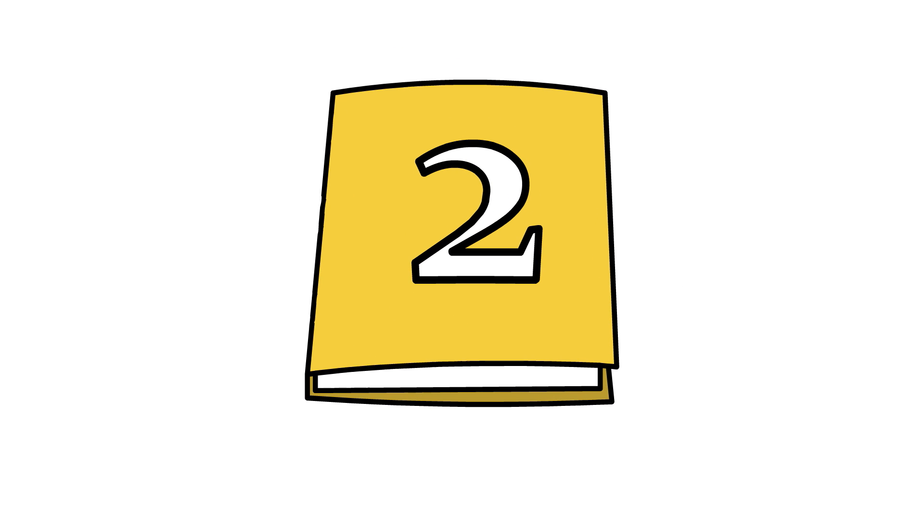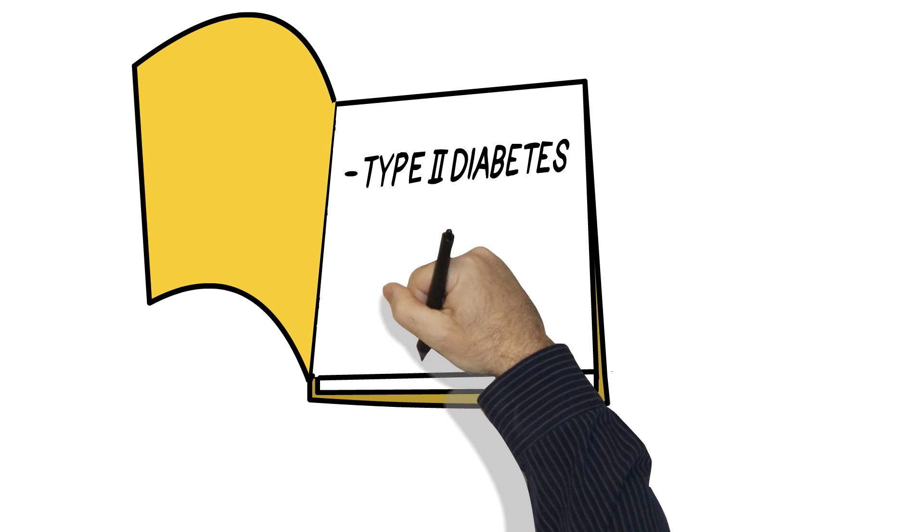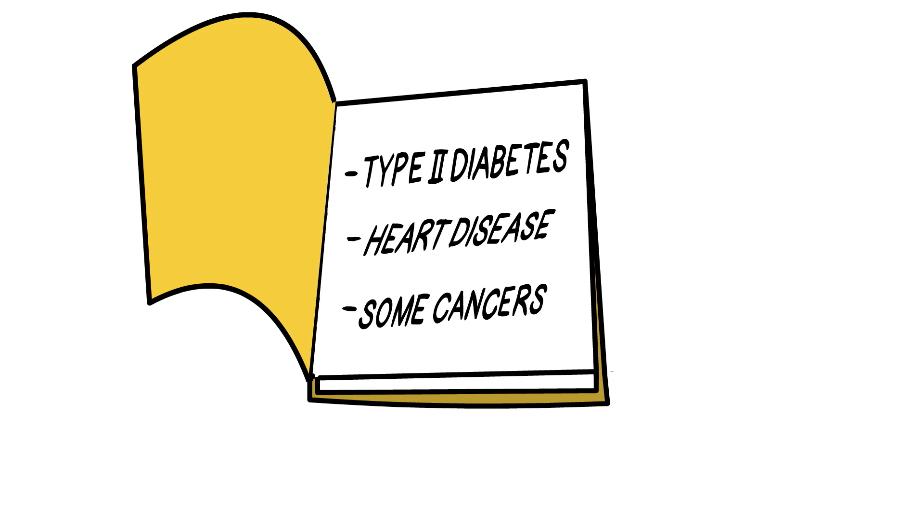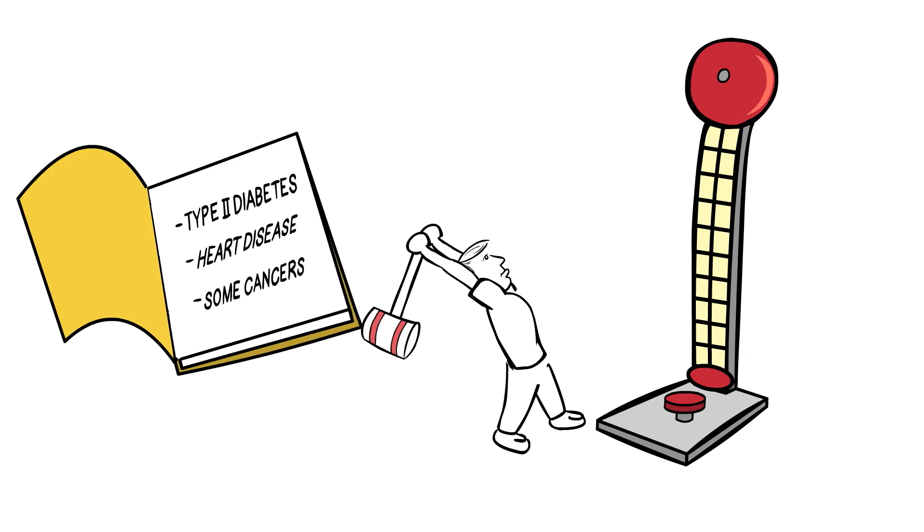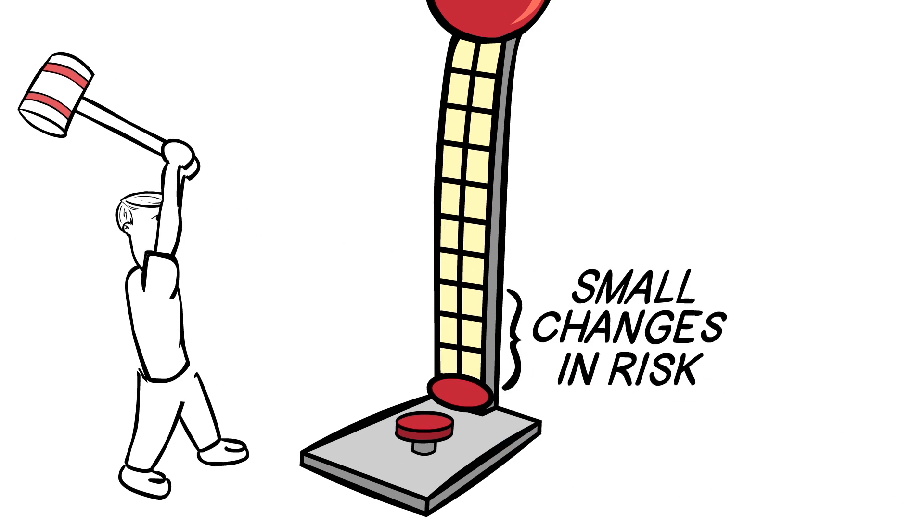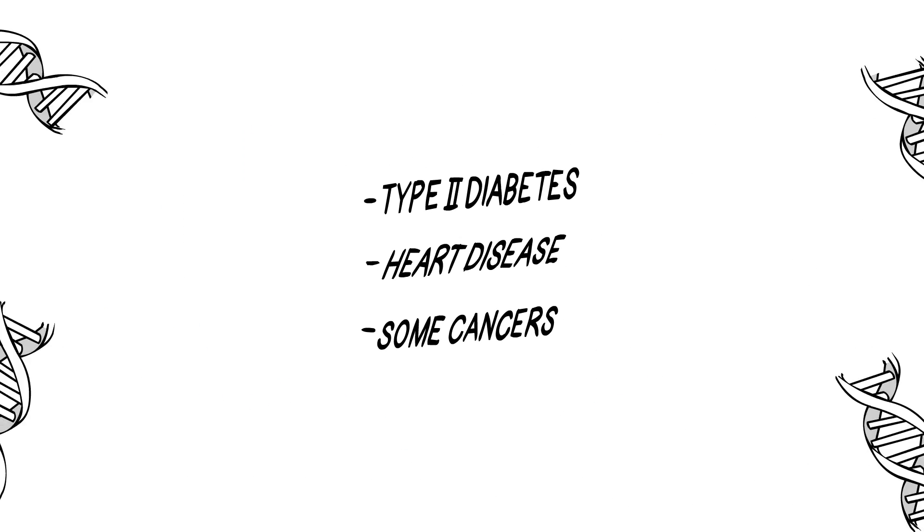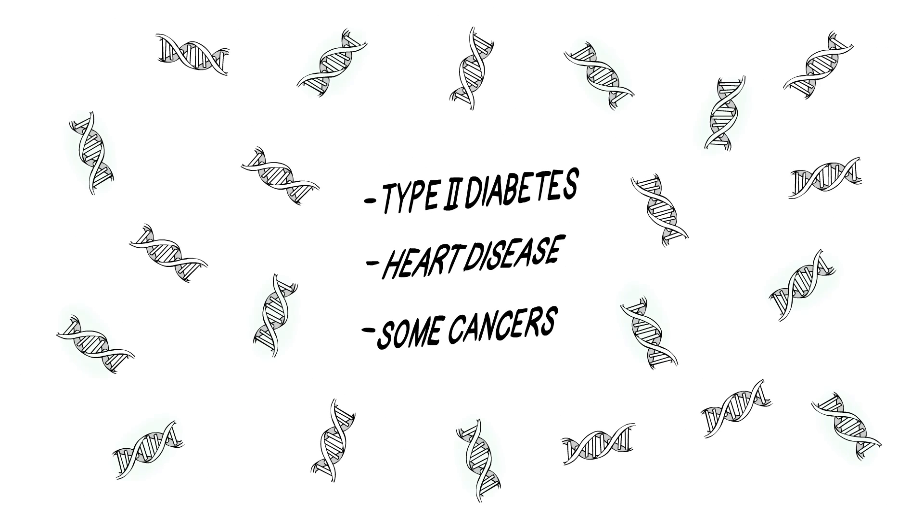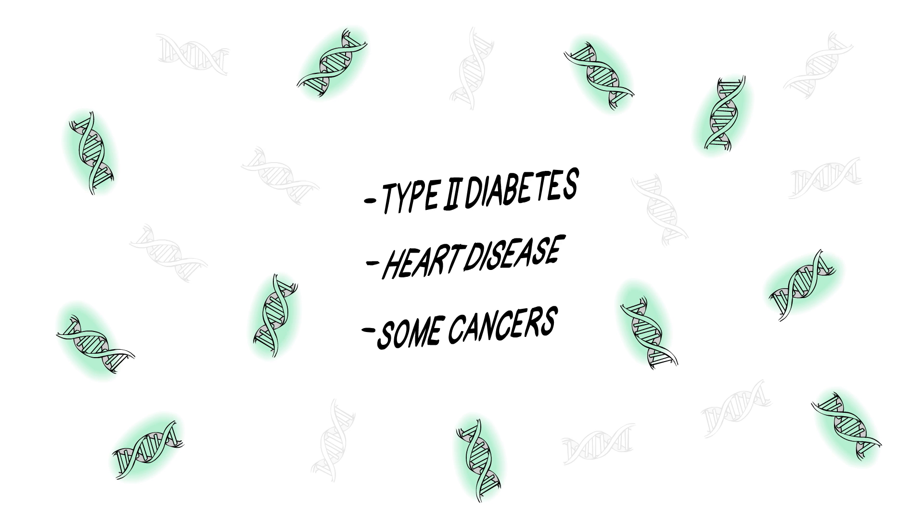Category two includes your risk for common diseases, such as type 2 diabetes, heart disease, and some cancers. This may sound helpful, but it's really important to know that these changes in risk are typically small, and that's because these common diseases are caused by multiple genes, some of which we know of and some of which we don't.